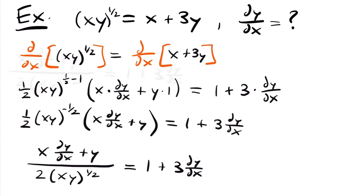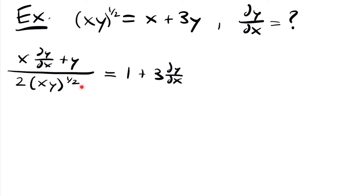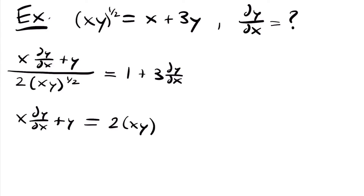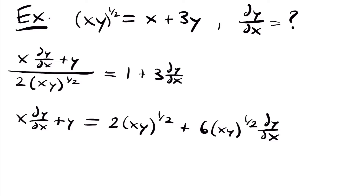The next step is to multiply both sides by 2 times xy to the 1/2 power, which eliminates the denominator on the left side. So we get x dy/dx plus y equals 2xy to the 1/2 power plus 6xy to the 1/2 power dy/dx — that 3 and that 2 multiply to become 6.